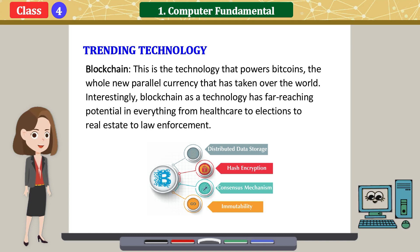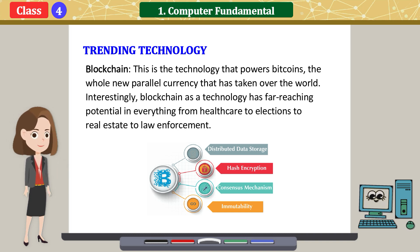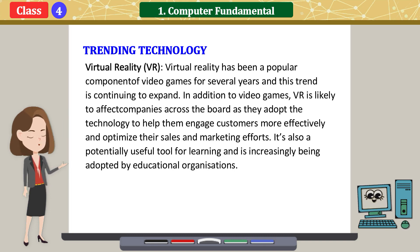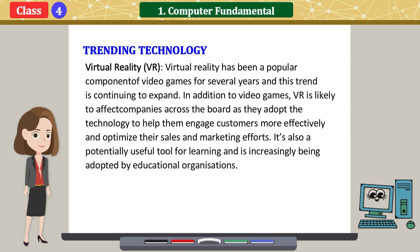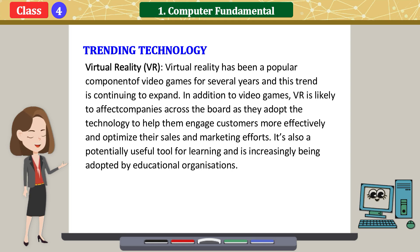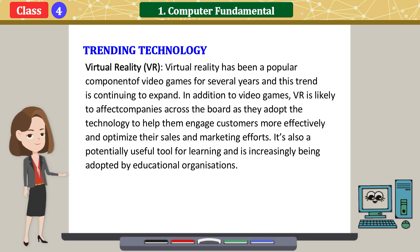Blockchain: this is the technology that powers bitcoins, the whole new parallel currency that has taken over the world. Interestingly, blockchain as a technology has far-reaching potential in everything from healthcare to elections to real estate to law enforcement. Virtual reality: virtual reality has been a popular component of video games for several years and this trend is continuing to expand. In addition to video games, VR is likely to affect companies across the board as they adopt the technology to engage customers more effectively and optimize their sales and marketing efforts. It's also a potentially useful tool for learning and is increasingly being adopted by educational organizations.